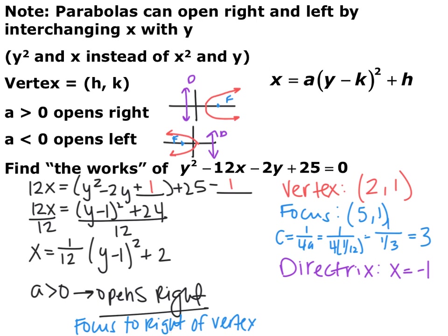Since the focus is to the right of the vertex, 2 plus 3 gives x equals 5, so the focus is (5, 1). The directrix is 3 in the opposite direction: 2 minus 3, so the directrix is x equals -1. The key thing to remember is that parabolas can now open left and right as well as up and down — your x and y's just switch. Focus and directrix: c is the distance between the vertex and the focus, or the vertex and the directrix, and that equals 1 over 4a, where a is the leading coefficient.